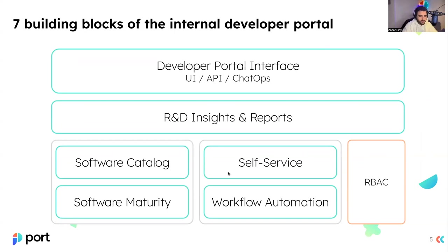Software maturity is another important pillar where you can embed your organizational standards for development and make sure they're being met in a way your engineering can follow. By using scorecards, you can basically certify your software in terms of production readiness, security, privacy, compliance, and so on.